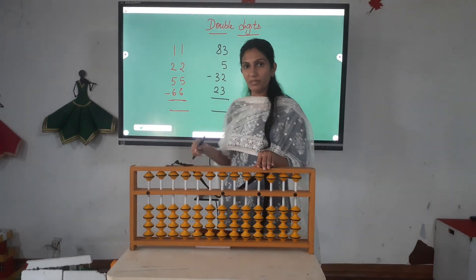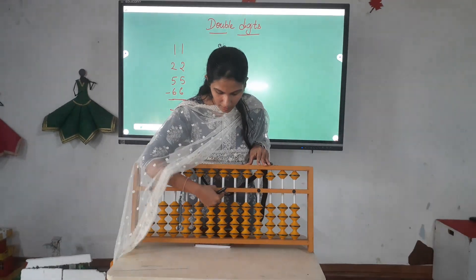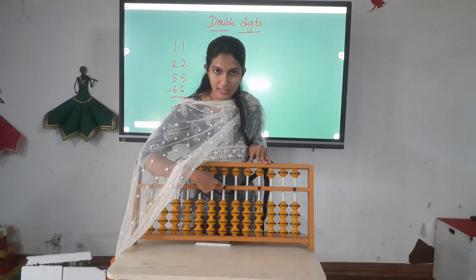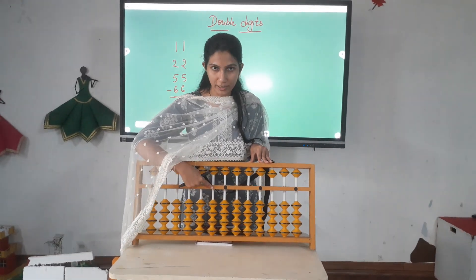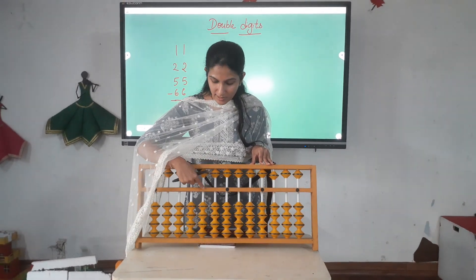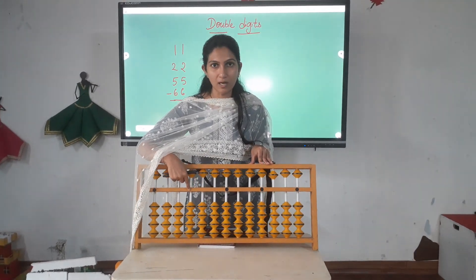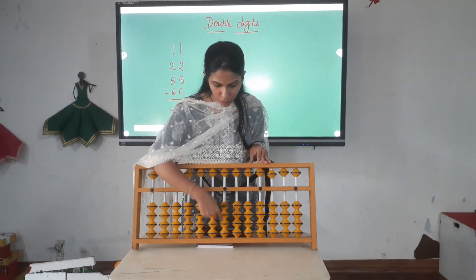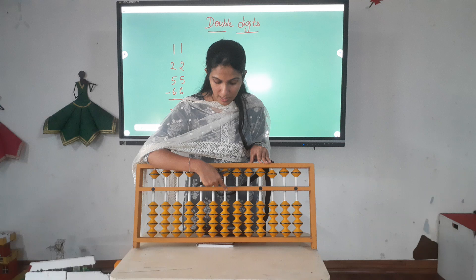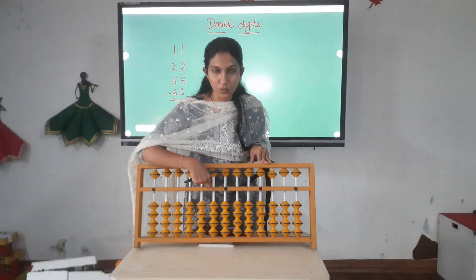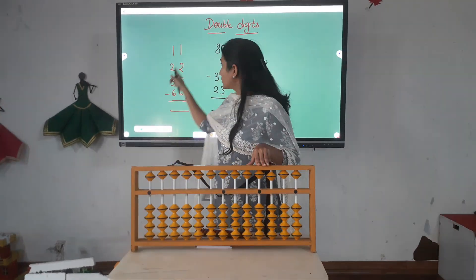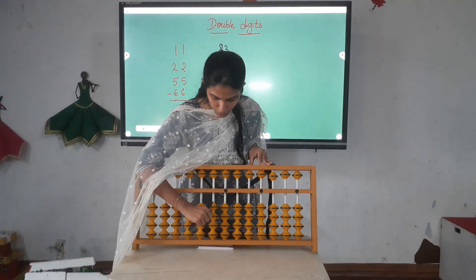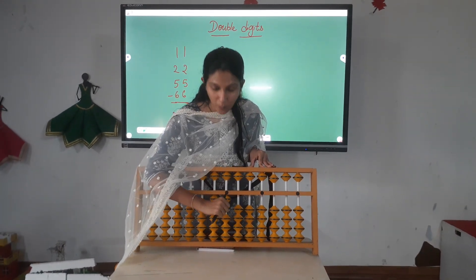Now it comes to double digit. When we use the Abacus, this is the 1's place, and the next rod goes as 10's place, then the 100's place, 1000's place, and so on. So when we use single digit, you have to use only the 1's place. When it is double digit, you move to the 10's place. So when it comes as 11, you push 1 bead here and 1 bead here.